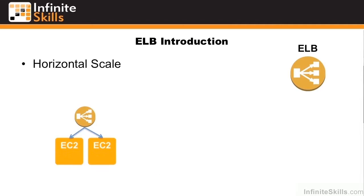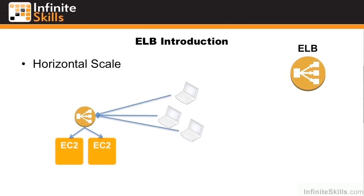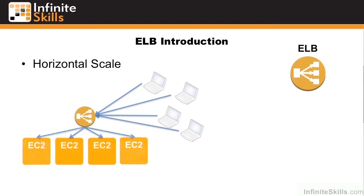If we look at horizontal scale, here we have the elastic load balancer at the top with two EC2 instances behind it, which is great for a single user. But when many users come and hit the site, we can simply grow out more EC2 instances.